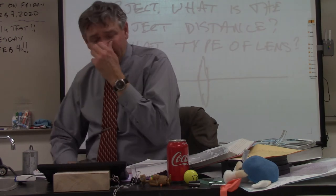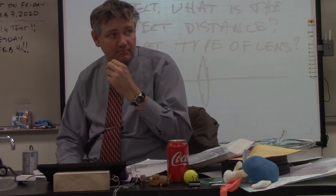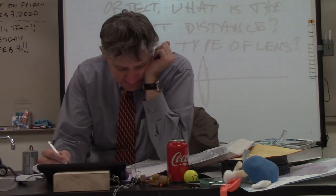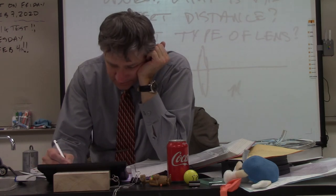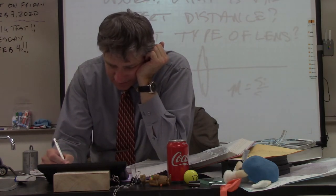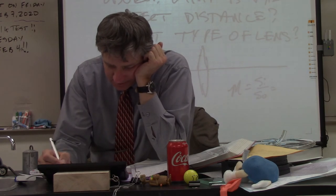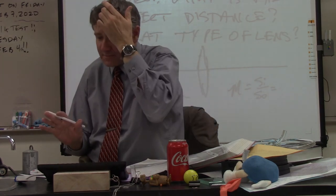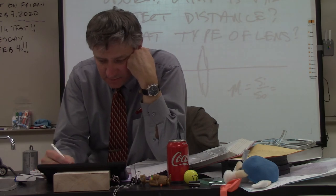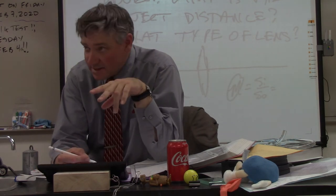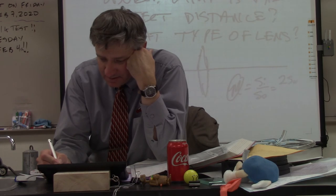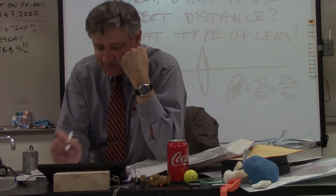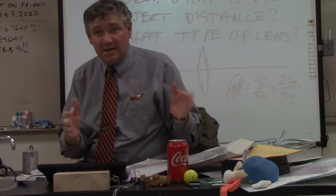Now, what's my magnification? Negative 2. What else is your magnification equal to? Negative Si over So. It's the only way I can get a magnification of 2 - Si is going to equal 2So. So 2So equals Si.